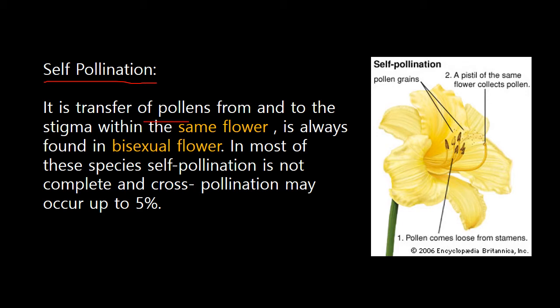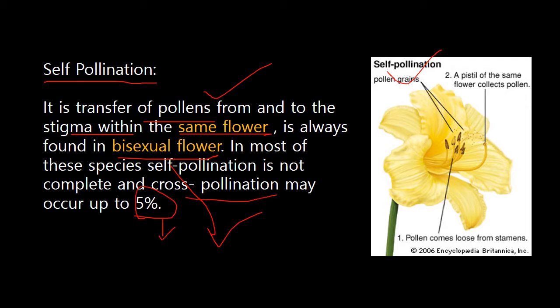Self-pollination is the transfer of pollen grains from anther to stigma within the same flower. It is usually found in bisexual flowers. In most of these species, self-pollination is not complete — cross-pollination may also occur at around five percent. So plants that use self-pollination as their main source of breeding will also reproduce by cross-pollination at a minor percentage.